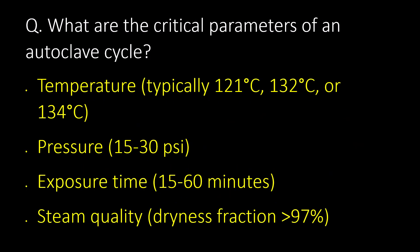What are the critical parameters of an autoclave cycle? First, temperature — typically 121°C, 132°C, or 134°C. Second, pressure — 15 to 30 psi. Third, exposure time — 15 to 60 minutes. And fourth, steam quality — drainage fraction greater than 97%.